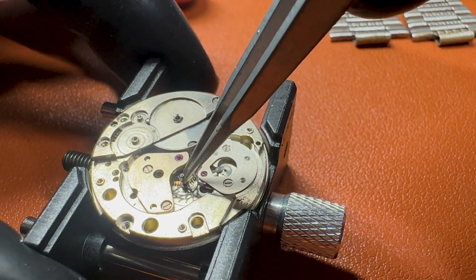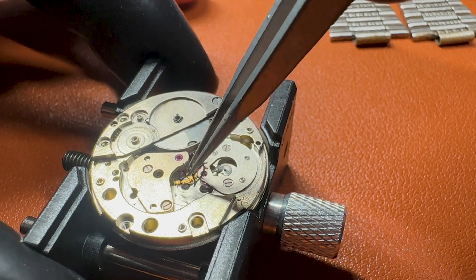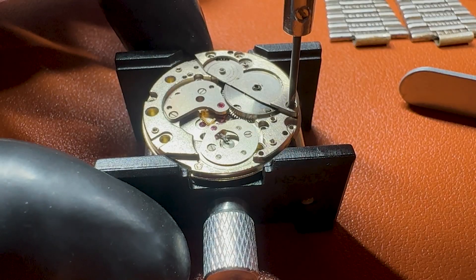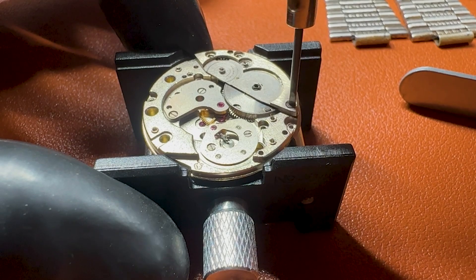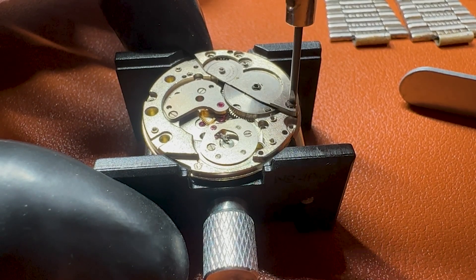And right now let's remove the plate that is holding the mainspring barrel.